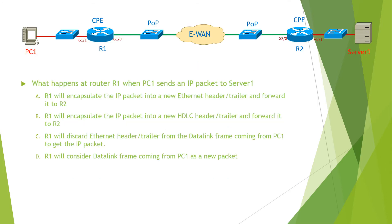The question reads: what happens at router R1 when PC1 sends an IP packet to Server 1? Option A: R1 will encapsulate the IP packet into a new Ethernet header and trailer and forward it to R2. Option B: R1 will encapsulate the IP packet into a new HDLC header and trailer and forward it to R2. Option C: R1 will discard the Ethernet header and trailer from the data link frame coming from PC1.